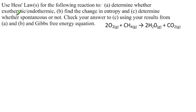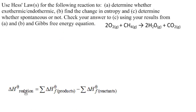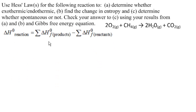So part A: determine whether it's exothermic or endothermic. That means we want to know whether the change in enthalpy of the reaction at standard state is positive or negative. We need the form of Hess's law which says that the change in enthalpy at standard state of the reaction is the sum of the changes in enthalpy for the formation of the products minus the sum of the changes in enthalpy at standard state for the formation of the reactants. So we need to find the change in enthalpy for the formation of the four constituents.